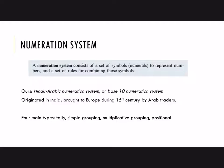Our system is called the Hindu-Arabic numeration system, and we also call it a base ten numeration system because we always group things by tens — the tens, the hundreds, the thousands. Different numeration systems use different bases; many were base ten, but some were not. The Hindu-Arabic system originated in India and was brought to Europe during the 15th century by Arab traders. We'll look at four main types of numeration systems: a tally system, a simple grouping system, a multiplicative grouping system, and a positional system.